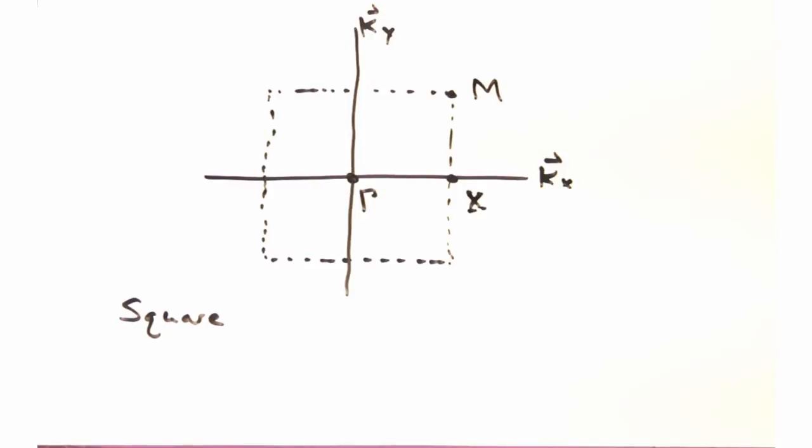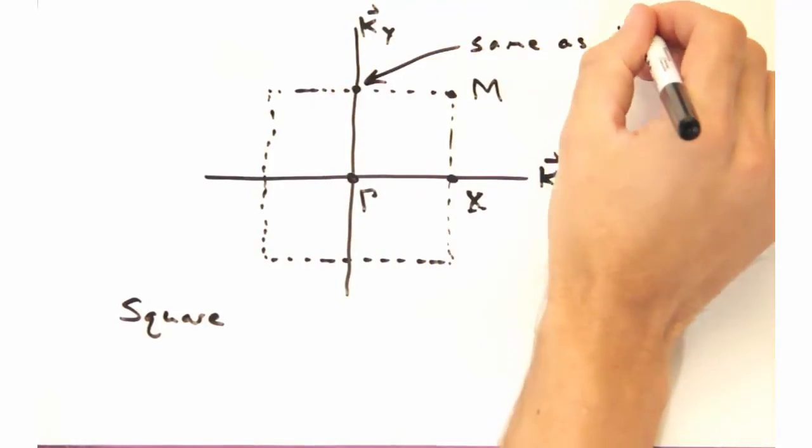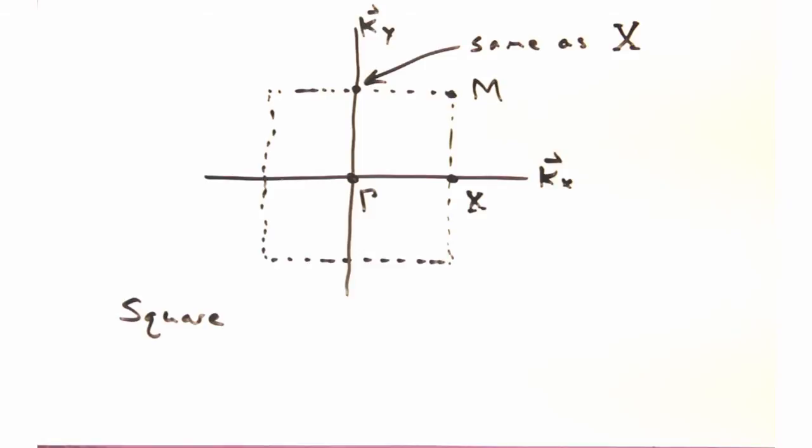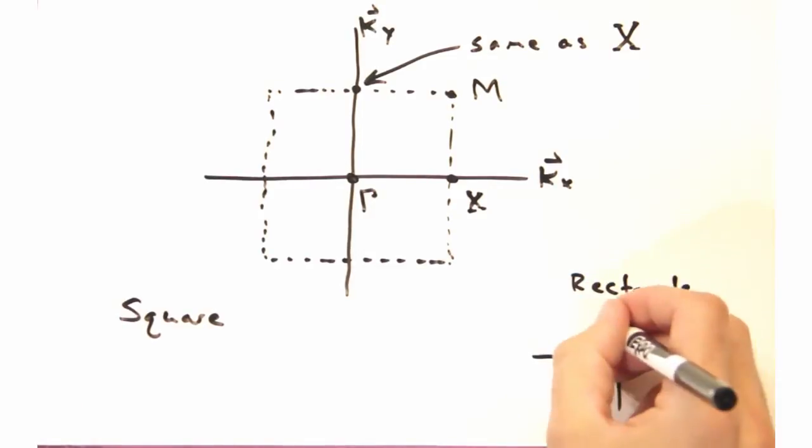Oh, so Y would be at the top edge, yeah? Not quite. For a square, X and Y are the same point due to symmetry, so we don't bother plotting it as a separate point. But what about other Brillouin zone shapes? The Y would be important then, right? Absolutely.